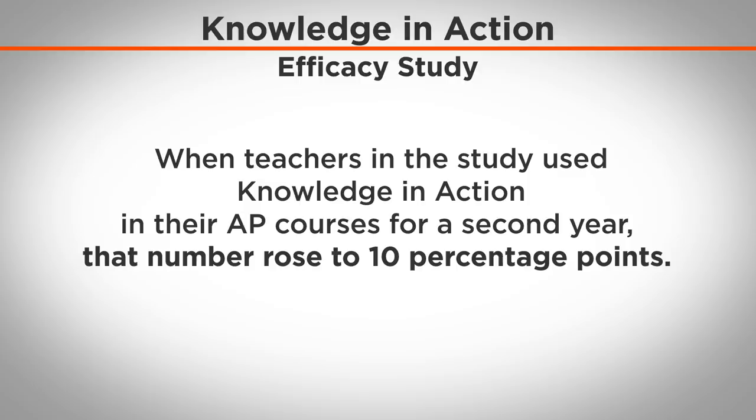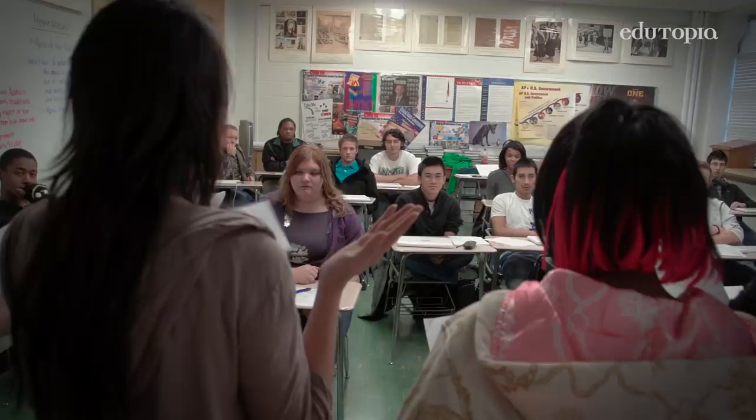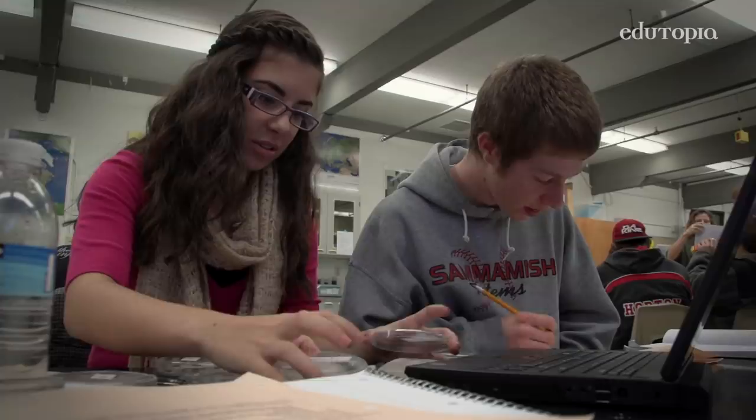Our overall pattern of results showed Knowledge in Action students outperforming control students on their probability of earning a qualifying score on the AP exams. We saw that pattern of positive results within the AP U.S. Government course, within the AP Environmental Science course, within students from lower-income households, within students from higher-income households, and within each of the five districts. I think that's very compelling.